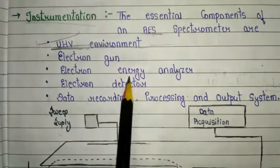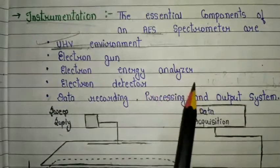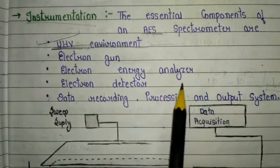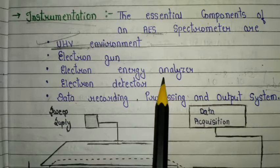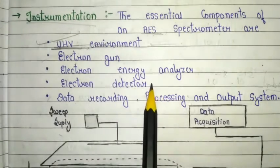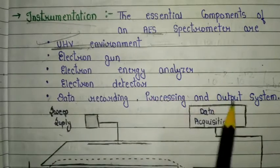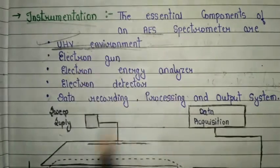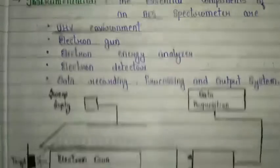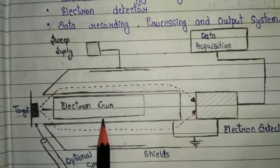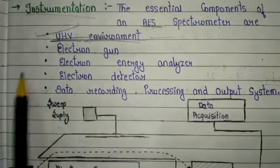The UHV environment is characterized by a pressure lower than 10⁻⁸ to 10⁻¹² mbar. It is very important for scientific research because experiments often require a chemically clean sample surface with the absence of any unwanted absorbance. That is why an ultra high vacuum environment is essential. The second essential component is the electron gun, which bombards the electromagnetic radiation onto the target sample.